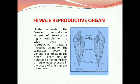Unlike mammals, the female reproductive system of the teleost is highly variable with a wide range of reproductive patterns, including viviparity. The teleostean ovary is a hollow paired organ. There may be hundreds or even millions of fertile eggs present in the fish at any given time. In the picture, dorsal view and ventral view of the female reproductive organs are shown, including immature and mature eggs, blood vessels, and mature eggs.